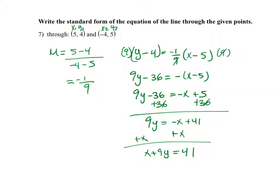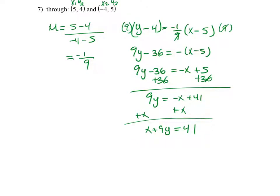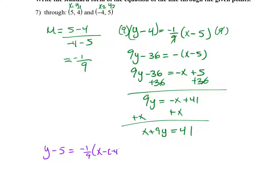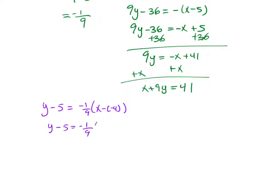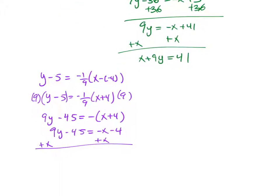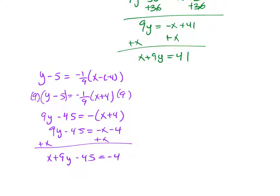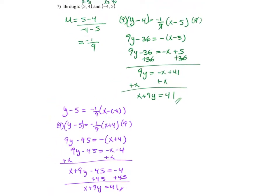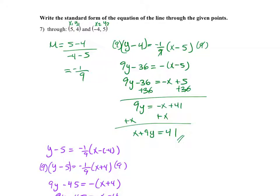I'll verify using the second point. With y minus 5 equals negative 1/9 times x plus 4, multiplying by 9 gives 9y minus 45 equals negative x minus 4. Adding x on both sides: x plus 9y minus 45 equals negative 4. Adding 45 on both sides: x plus 9y equals 41. As you can see, both points give the same equation. You only need to use one point — it doesn't matter which one you pick.